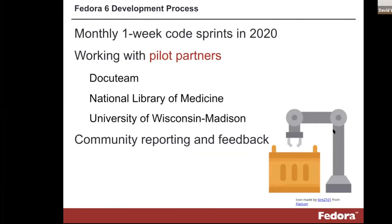Just to wrap up and talk about where we are: we are running a code sprint for Fedora 6 the first full week of every month, all through this year, with the goal of getting to a beta release this year. We have a number of pilot partners — institutions that have agreed to work with us more closely. We're eager to make sure that all along the way as we develop, we're validating as we go and making corrections as needed, so we don't get all the way to the end and realize we've made errors we need to go back and correct.